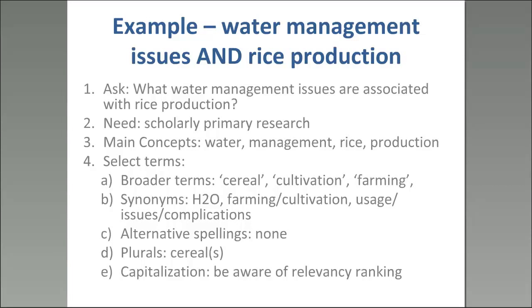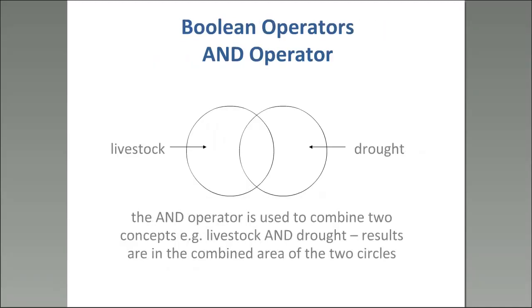Here's an example in text: I'm looking at water management issues and rice production. My main concepts might be water, management, and rice production — but there are synonyms. If you use two restrictive words you may be excluding things that might be very useful for your search. So look at broader term synonyms. There may be a plural form too. How you search and the words you put in really determine what you find.